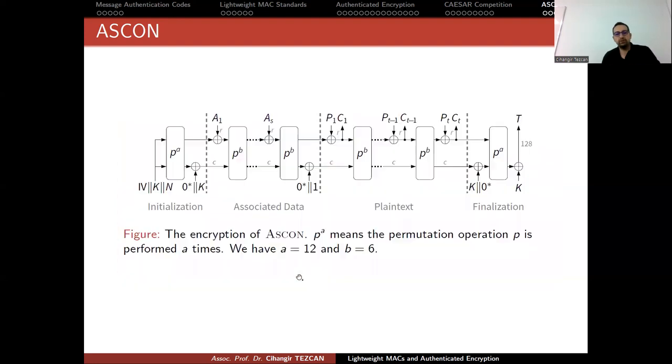The whole picture of ASCON is as follows. You have the initialization phase. Recall that our internal state was 320 bits. Initially you fill it with IV, your secret key, and nonce. So 128-bit key, 128-bit nonce, so you end up with 64-bit IV. You fill the internal state with this and perform your permutation, your sponge function, A many times, and A is 12.